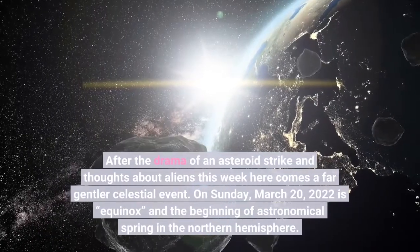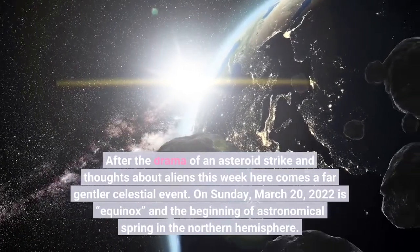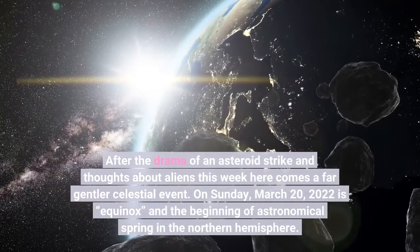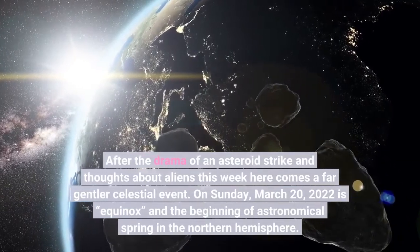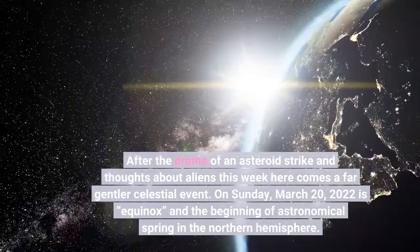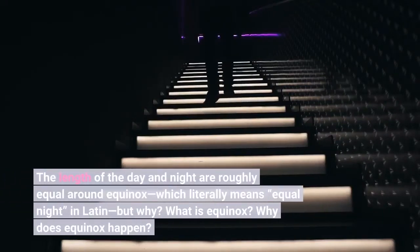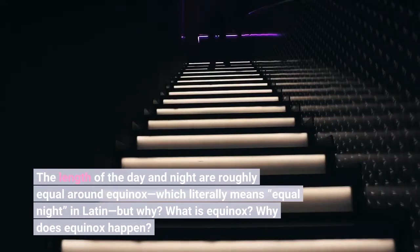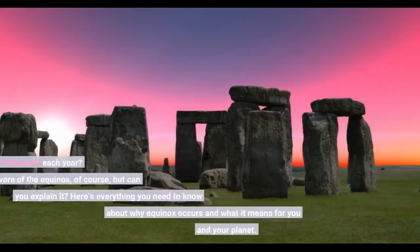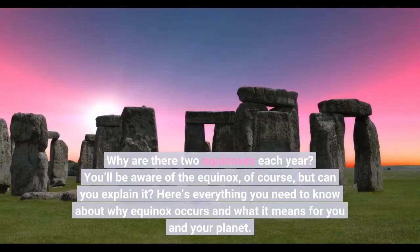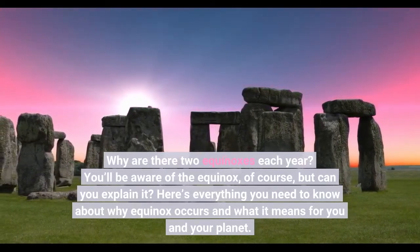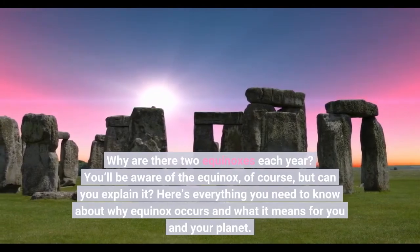After the drama of an asteroid strike and thoughts about aliens, here comes a far gentler celestial event. On Sunday, March 20, 2022, is Equinox and the beginning of Astronomical Spring in the Northern Hemisphere. The length of the day and night are roughly equal around Equinox, which literally means equal night in Latin. What is Equinox? Why does Equinox happen? Why are there two Equinoxes each year? Here's everything you need to know about why Equinox occurs and what it means for you and your planet.